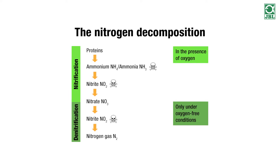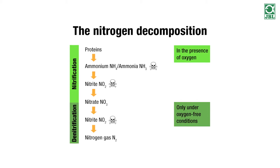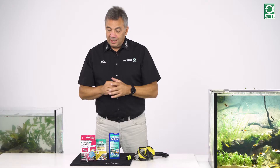The bacteria break oxygen out of the nitrate, NO3. It turns into nitrite, NO2. If even more oxygen is taken, we have NO. And if all of the oxygen is taken, we have N — pure nitrogen. This is a gas, and the gas escapes from the water. This would be the cycle for the reduction of nitrogen in the aquarium.